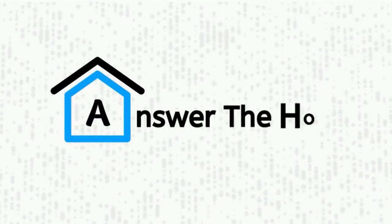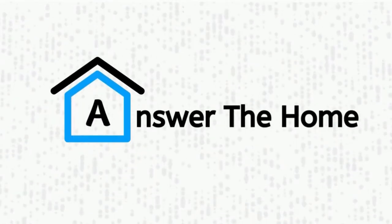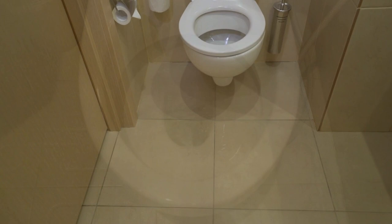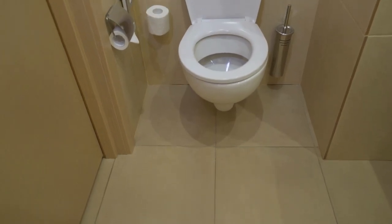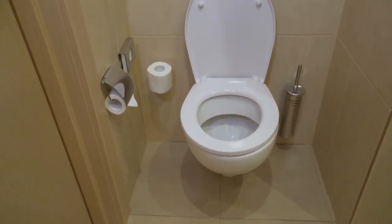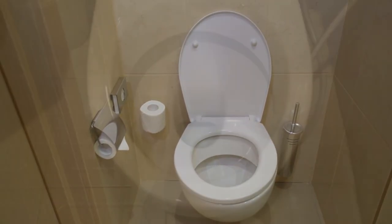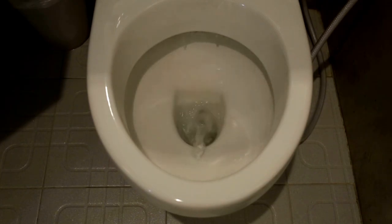Welcome to Answer the Home. Today we will talk about the causes of developing stains and gray sediments in the toilet bowl. There are many reasons behind the formation of gray or other sediments on your white toilet bowl. In most cases, hard water forms sediments with minerals.